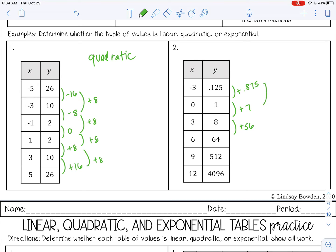It doesn't look like it's quadratic either, but let's check. So to get from 0.875 to 7, I need to add 6.125. Okay, that's definitely not what I need to add to get from 7 to 56. So this is definitely not linear or quadratic, which means it's probably exponential.